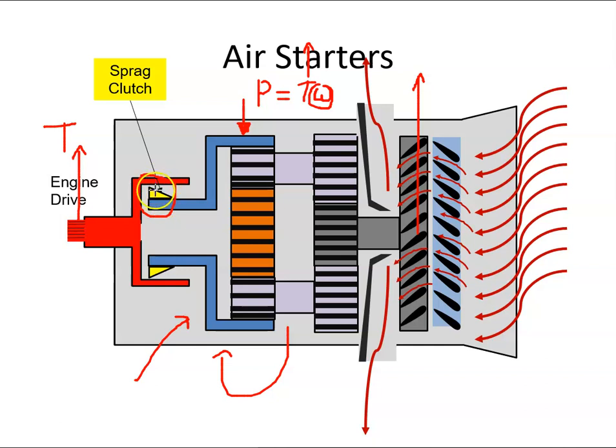And at that point, or just a little bit after self-sustaining speed, the sprag clutch disengages from the engine. So now the engine is free to rotate of its own accord, and we can close down the starter motor.